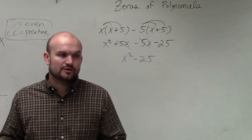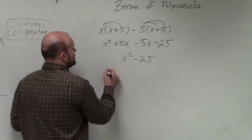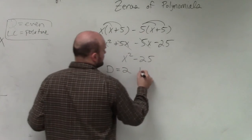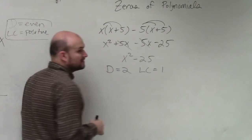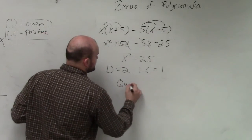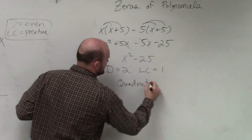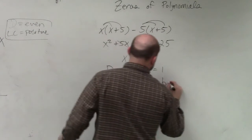It actually didn't ask for the degree and leading coefficient, but I'm still going to provide those. The degree in this case is 2. Leading coefficient is 1. This has a degree of 2, so it's a quadratic. And this has two terms, so it is a binomial.